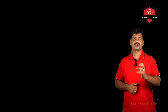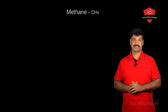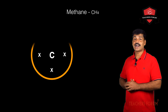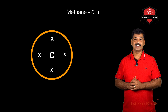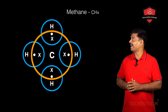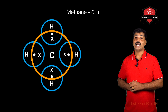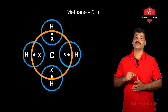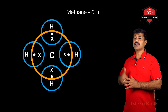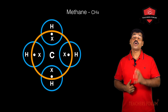Now let us discuss the simplest carbon compound, methane, with molecular formula CH4. Carbon has 4 electrons in the outermost shell, so each electron is shared with one hydrogen atom. As a result, carbon gets 8 electrons in the valence shell, and each hydrogen also gets 2 electrons in the outermost shell. That is how methane is formed.